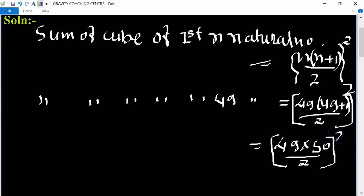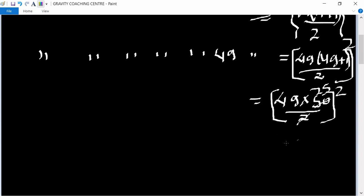So 50 is cancelled by 2, giving 25. And 49 into 25 equals 1225 squared. So therefore average equals...